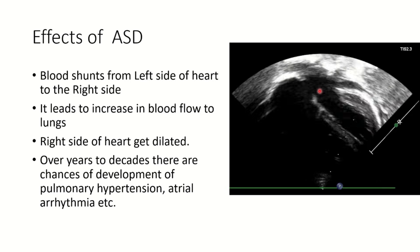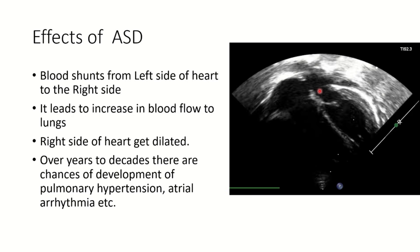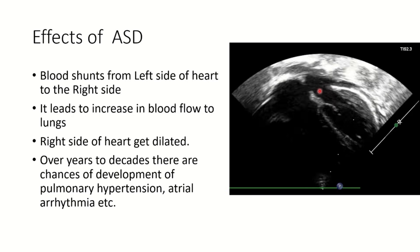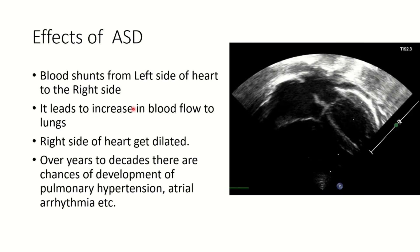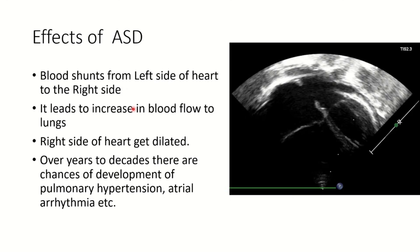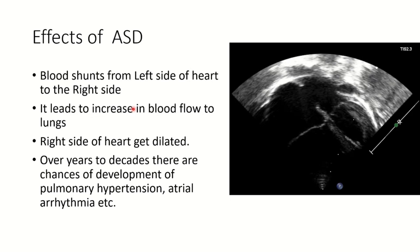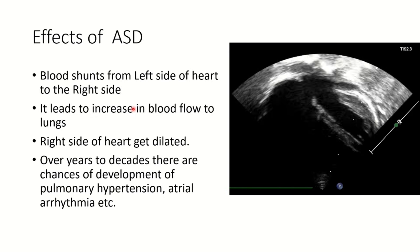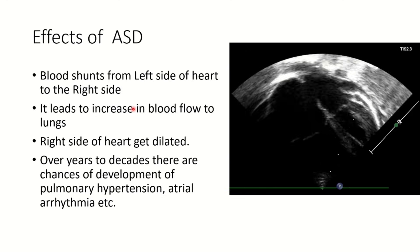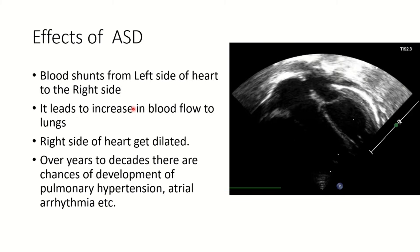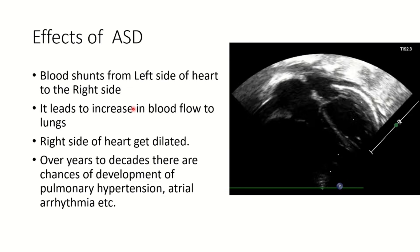What are the effects of ASD and how does it affect an individual? As already depicted in the pictures, blood goes from the left side to the right side. The right side increases in size, increased blood goes to the lungs, and the right heart becomes big and dilated. Over years — not months but over 20 to 30 years — there is increased blood flow to the lungs, which has a bad effect. Lung pressure goes on increasing, the patient develops pulmonary hypertension, and as the right side becomes big, they develop atrial arrhythmias.